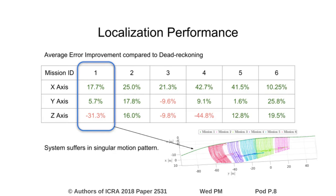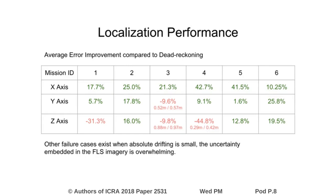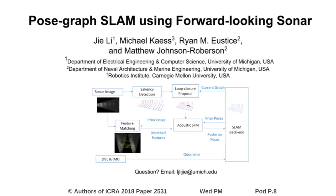Failure cases are also analyzed when the trajectory only contains singular motion patterns or the absolute drifting is very small such that the measurement noise is overwhelming. Please come to our poster for more detailed information of our real-time forward-looking sonar SLAM algorithm. You are always welcome to email the author for questions or discussions.